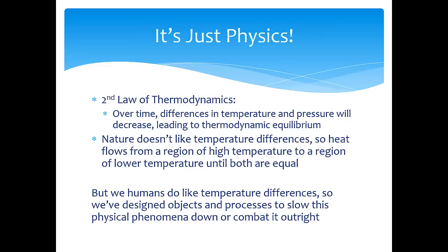It really comes down to simple physics, specifically the second law of thermodynamics. It states that over time, differences in temperature will decrease until there's a thermodynamic equilibrium. Mother Nature doesn't like temperature differences, so when there are two regions and one is hotter than the other, heat flows from the higher temperature region to the lower temperature region until they're the same temperature. But we've designed objects and processes to slow, stop, or reverse this physical phenomenon. We invented coats so that when it's cold outside, we can keep ourselves warmer. And we use HVAC equipment to keep our buildings cool in the middle of summer.